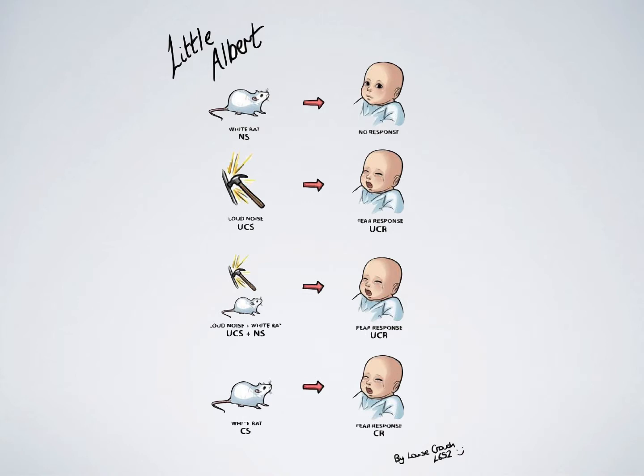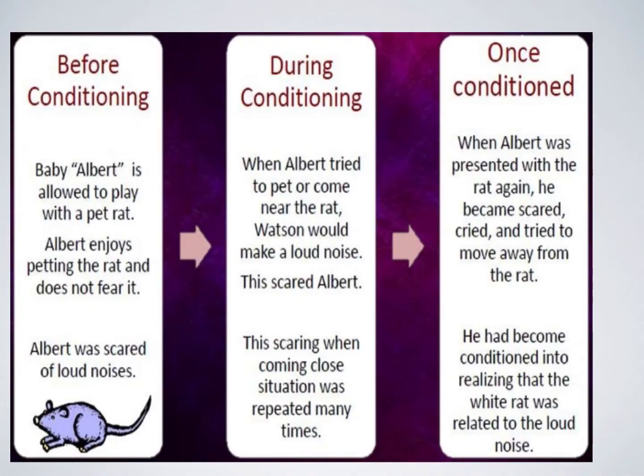Albert developed a strong phobia of the rat after the experiment and would show signs of fear when he saw similar objects such as cotton wool, the family dog, and even Santa. Watson and Rayner demonstrated how classical conditioning can create phobias.